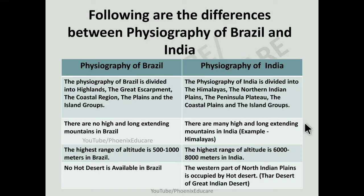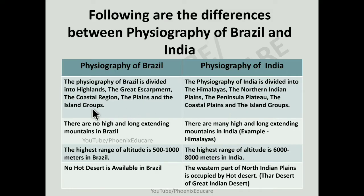The Physiography of Brazil is divided into Highlands — Central Highland or Brazilian Highland — then there is the Great Escarpment, the Coastal Region of Brazil, Plains in Brazil, and Island Groups. The Physiography of India is divided into the Himalaya Mountains in the north, Northern Indian Plains, Peninsular Plateau, Coastal Plains, and Island Groups. India has prominent Marayan Island Groups, which are not found in Brazil.